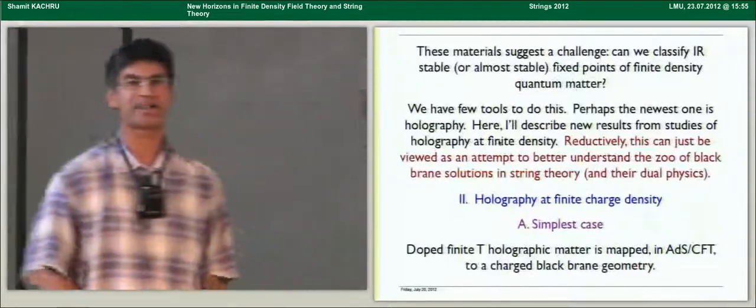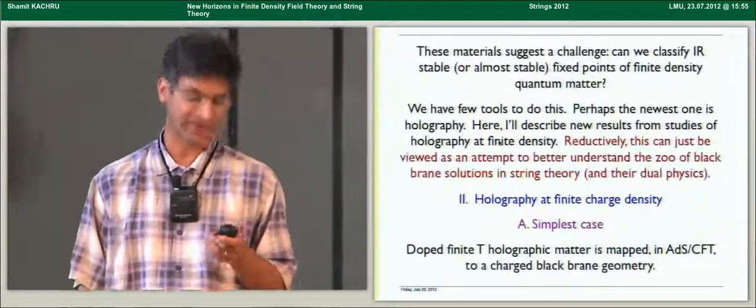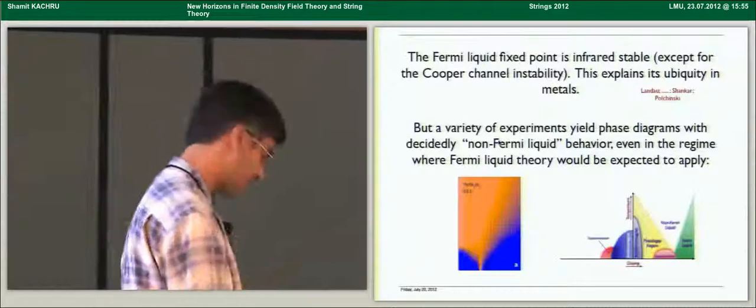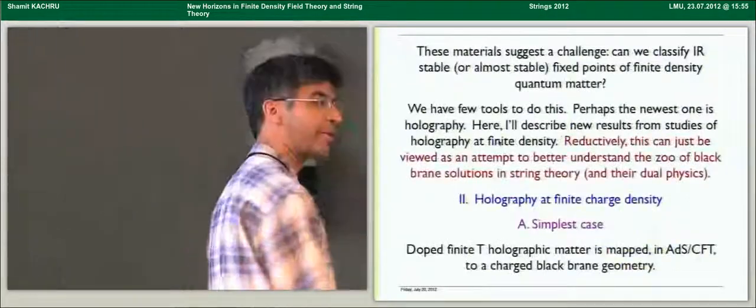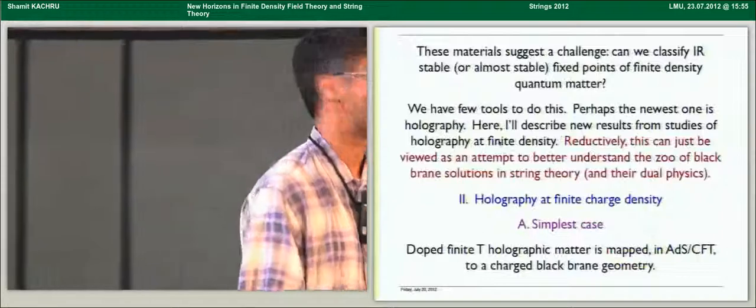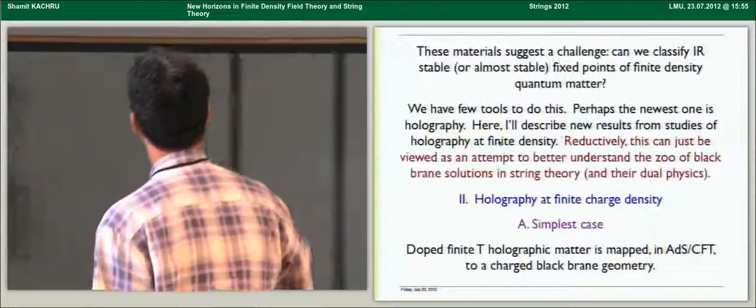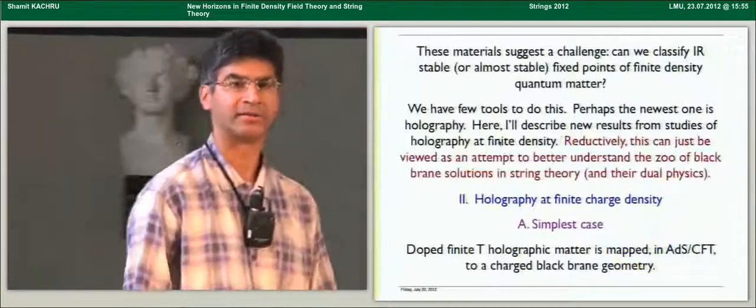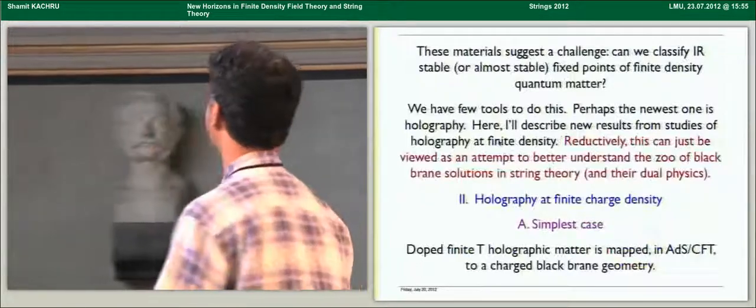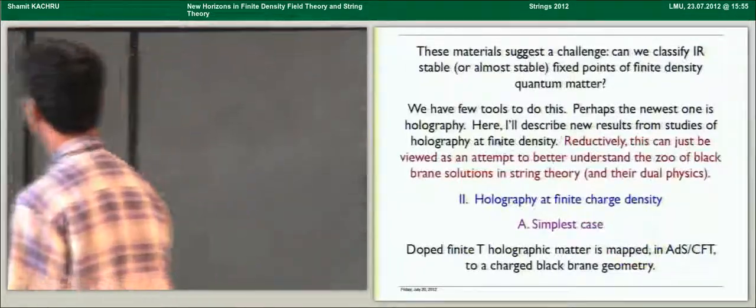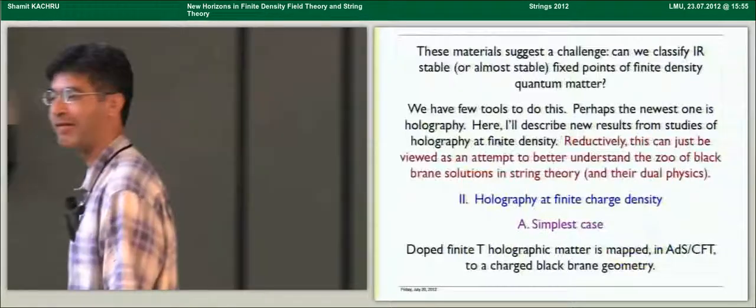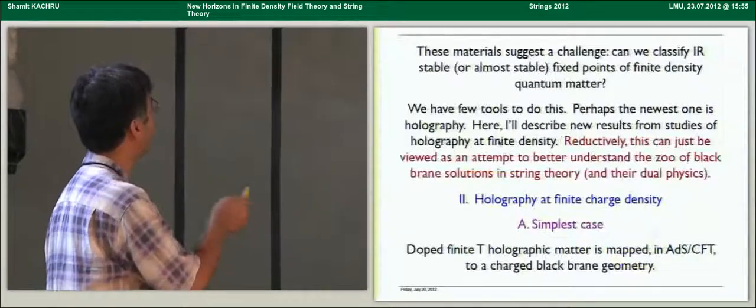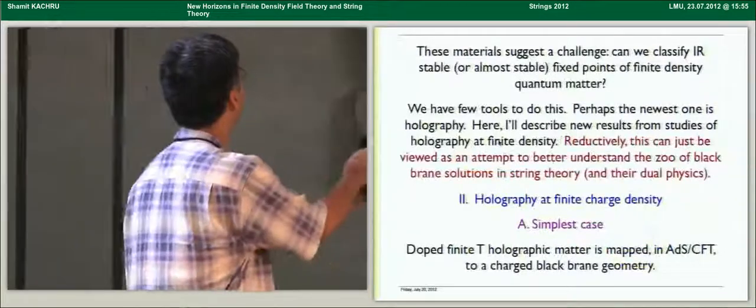So these materials suggest, at the broadest level, a challenge. We're string theorists, none of us can even really figure out what this compound is, so the challenge is not to explain this data exactly. But the challenge is there are apparently qualitatively new infrared stable phases of matter or almost stable phases of matter, so can we classify infrared almost stable fixed points of finite density quantum matter? Now, this is, of course, too broad and difficult a question, because we have very few tools to do this. But we do have one somewhat new tool, holography, and so here I'll describe some new results that come just from studies of holography at finite density, motivated by this goal.